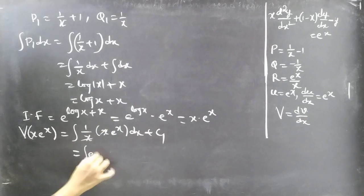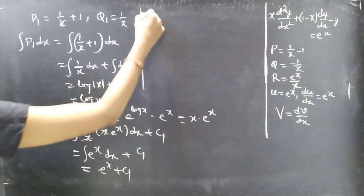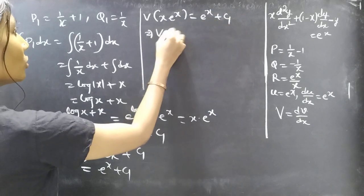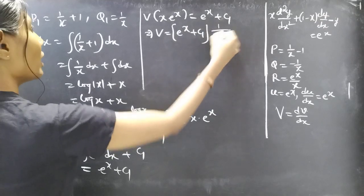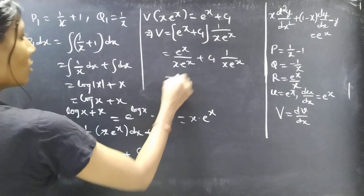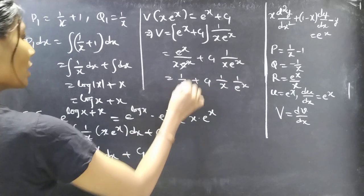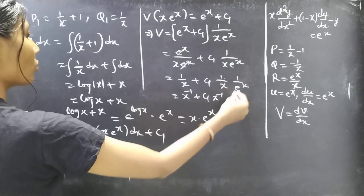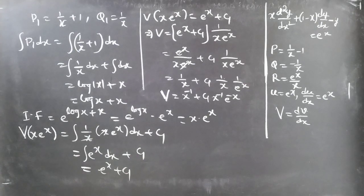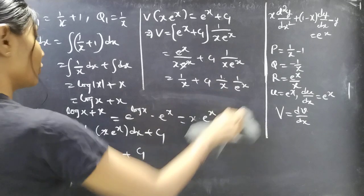Here x cancels inside the integral, giving V · x · e^x = ∫e^x dx + C₁ = e^x + C₁. Dividing both sides by x · e^x, we get V = e^x/(x · e^x) + C₁/(x · e^x) = 1/x + C₁ · (1/x) · e^(−x).